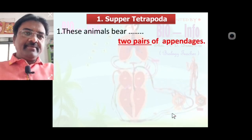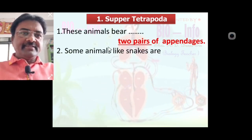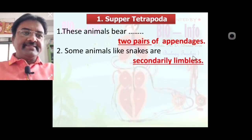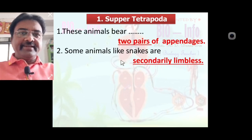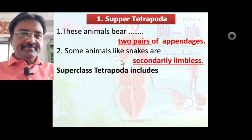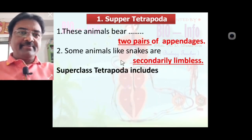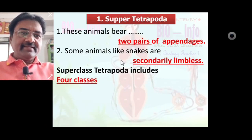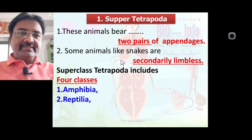Superclass Tetrapoda: 'Tetrapoda' means the animal bears four appendages — two pairs of appendages. Some animals like snakes are secondarily limbless. Always remember that secondary limbless animals like snakes are included in the Tetrapoda animal group. Superclass Tetrapoda includes four classes: Amphibia, Reptilia, Aves (birds), and Mammalia.